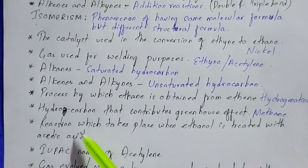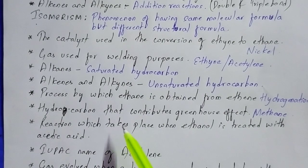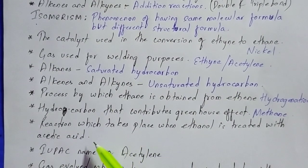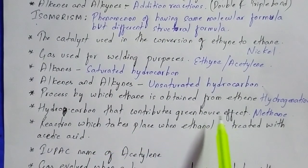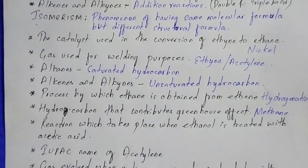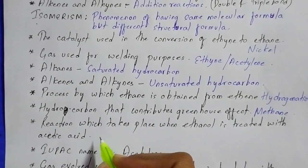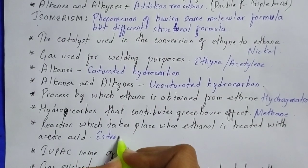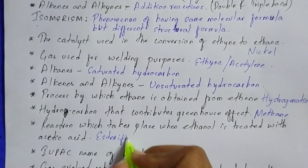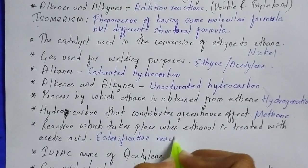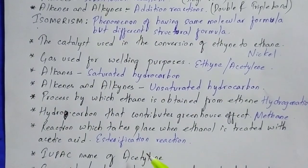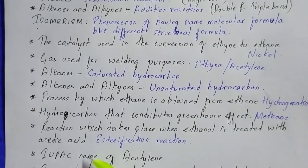The next one is: name the reaction which takes place when ethanol is treated with acetic acid. The reaction is esterification. This is one of the famous reactions from organic chemistry. Esters are detected by their fruity smell.